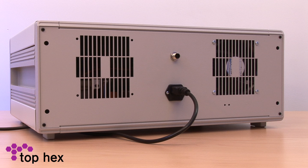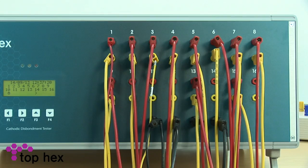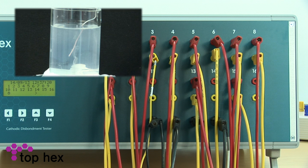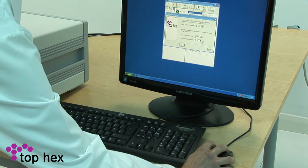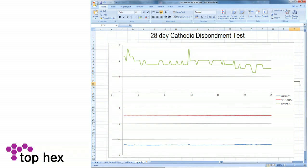The temperature logging module connects to the CD tester via a pluggable cable. During the test, the temperatures are logged to non-volatile RAM along with the CD test data. The test data can then be extracted onto your PC for analysis.